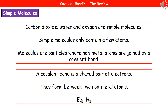A molecule is a particle where non-metal atoms are joined by a covalent bond. A covalent bond is different to an ionic bond in that it forms between two non-metal atoms. Ionic bonds always form between a metal and a non-metal, but covalent bonds always form between two non-metal atoms. A covalent bond itself is a shared pair of electrons — this is what we see forming between two atoms of hydrogen, for example, to make the hydrogen molecule.